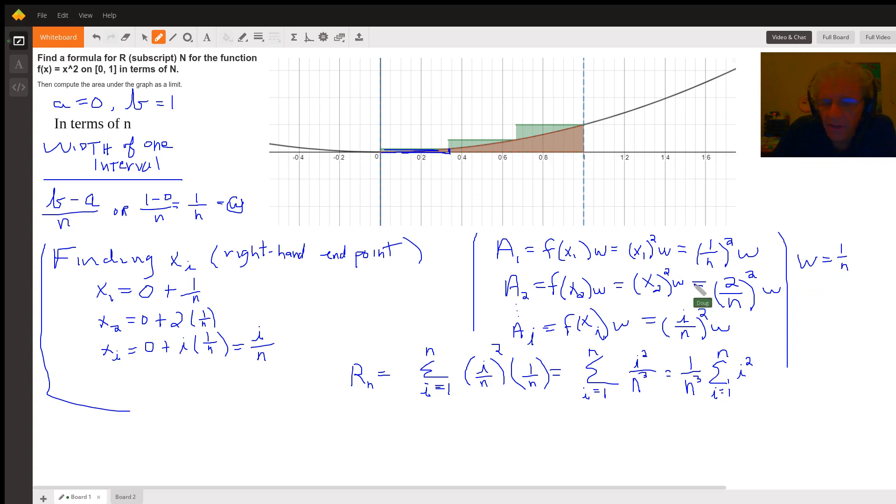Similarly, A sub i, now we're generalizing, would be f of x sub i times the width of the rectangle. And we know that x sub i is i over n, we'd square that to get the height of this generalized rectangle and multiply that by the width which is one over n.